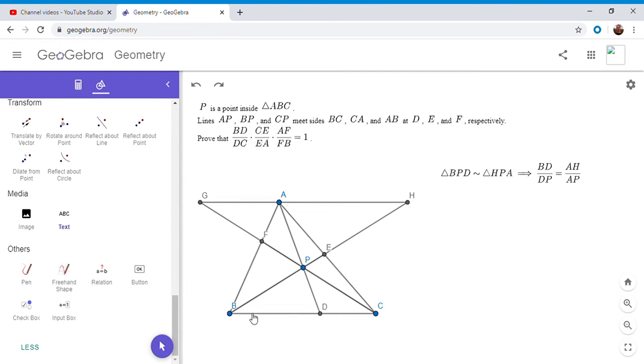And then we can do the same with the triangle CPD. So CPD has to be similar to GPA for the same reason as before. So we have the proportion CD over DP is AG over AP. And we can divide these two proportions because they both have DP and AP in the denominators. So when we divide the two, we get BD over CD is equal to AH over AG.